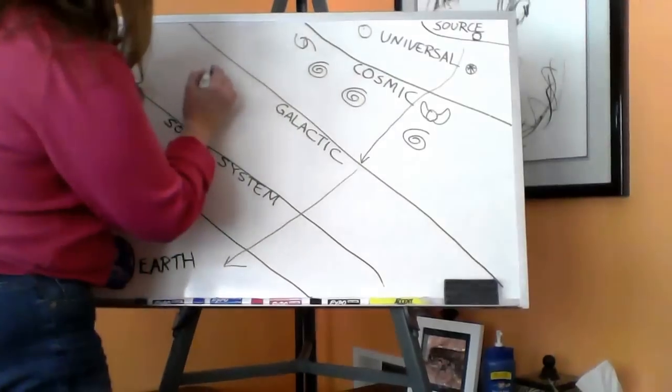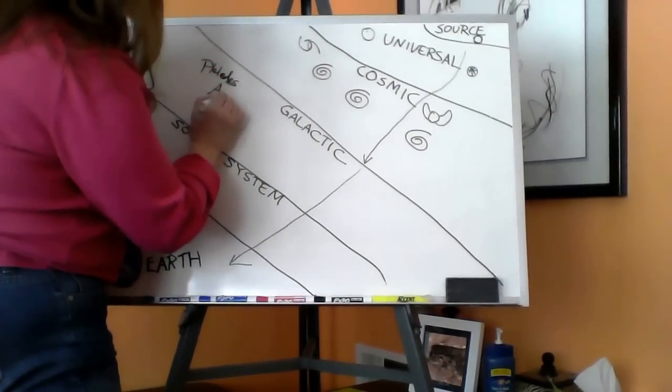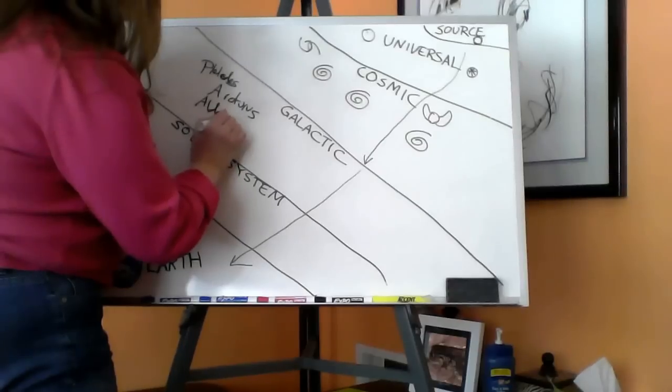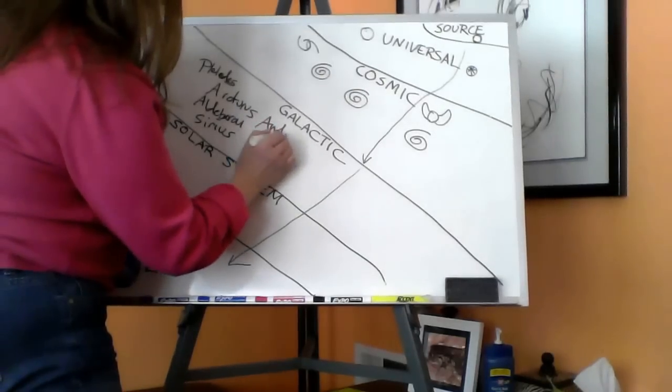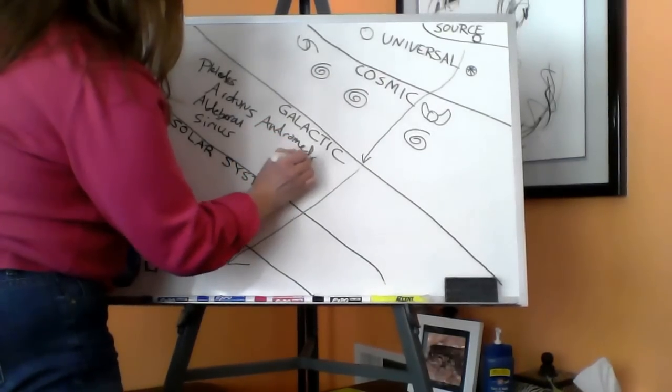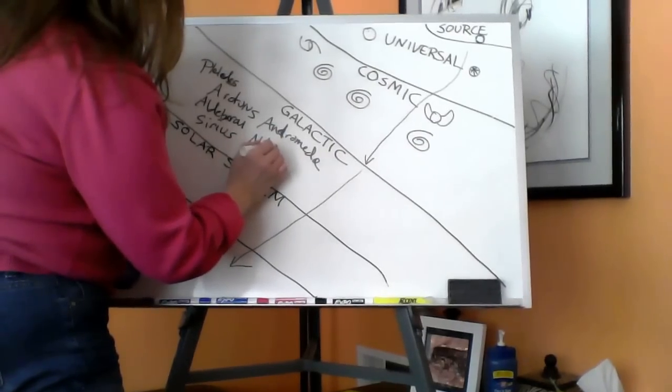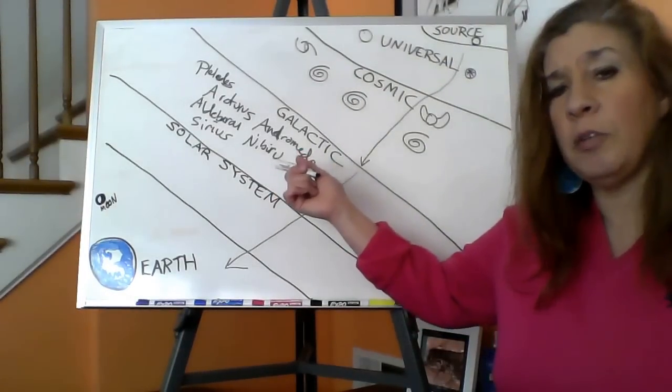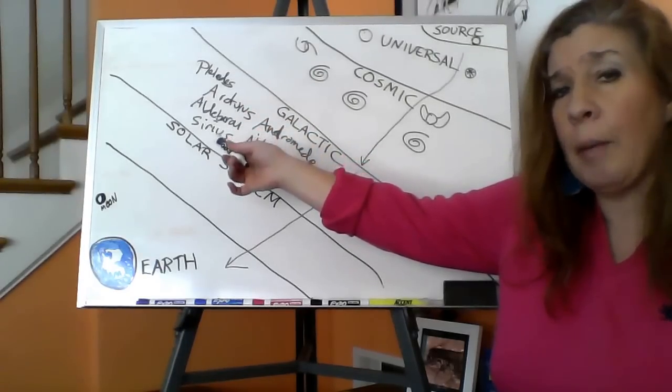We can travel through the dimensions. We have a vibration that enables us to be interdimensional as well as multi-dimensional. Then you have places like the Pleiades, Arcturus, Aldebaran, Sirius, Andromeda. Not all of these names will be familiar to everybody because you all have chosen different experiences, but these are some of the names you hear more frequently. By no means is this a comprehensive list.